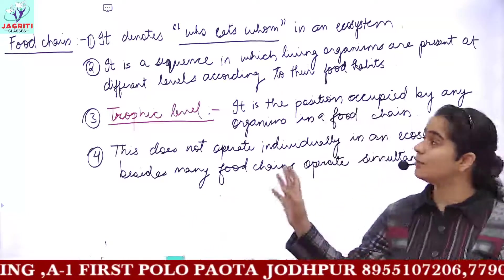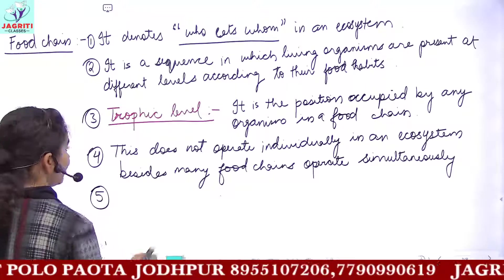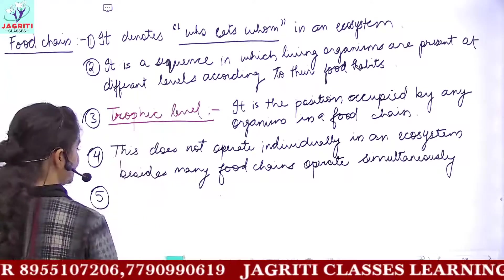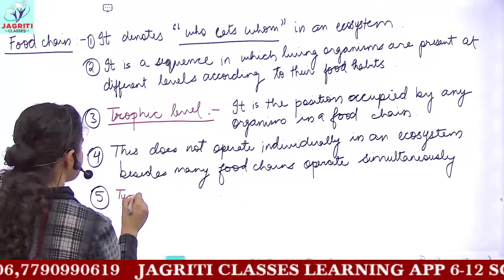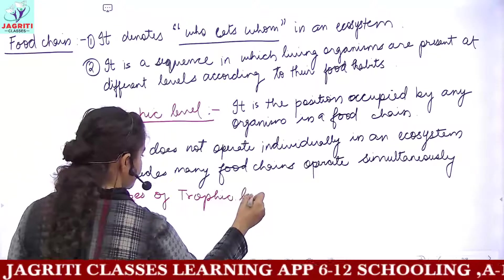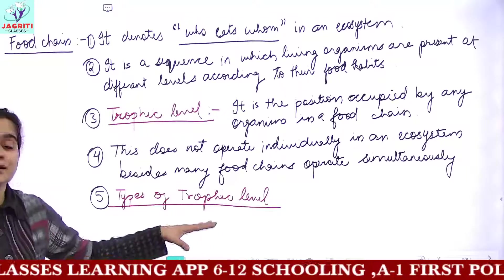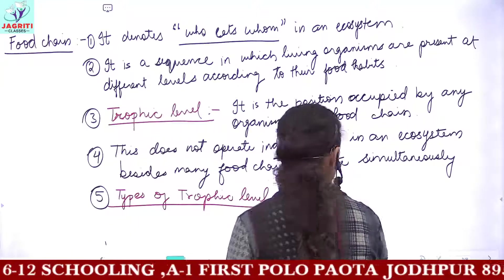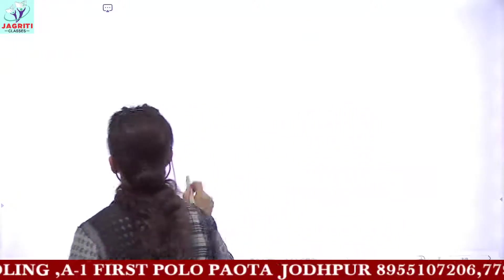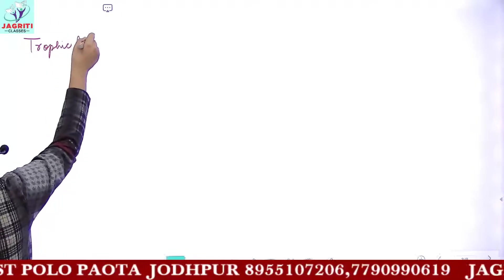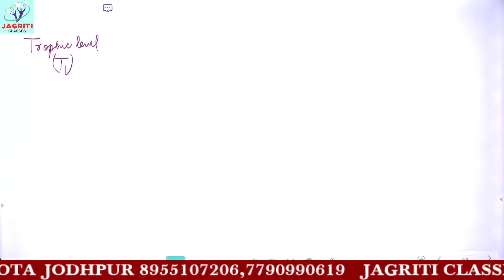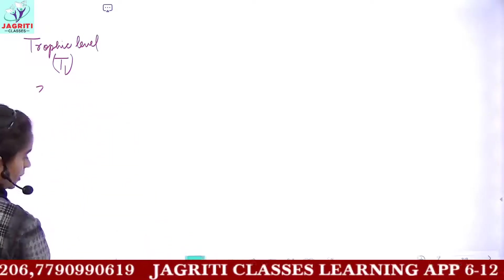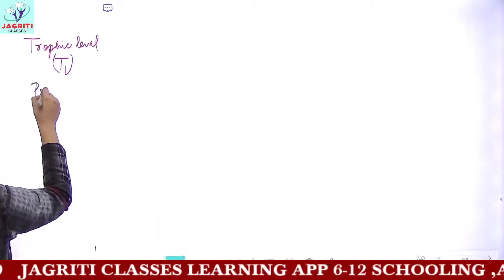Now we can take examples of food chains and see how many different types of trophic levels there are. Let's discuss the types of trophic levels. Trophic level is the position an individual organism is occupying. On the first trophic level, T1, we have producers or green plants, which are also called autotrophs.